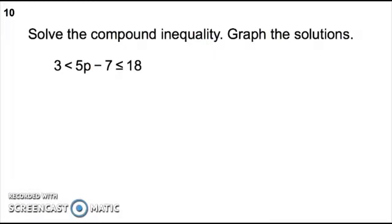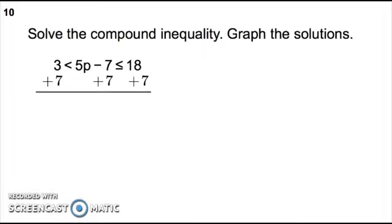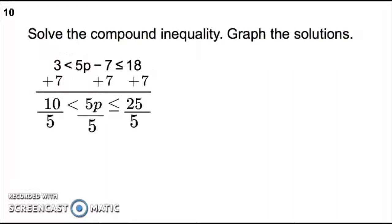Number 10: Solve the compound inequality and graph it. The first thing we're going to do is add 7 to all parts. So we have 10 is less than 5p is less than or equal to 25. Then divide everything by 5. You'll get 2 is less than p is less than or equal to 5.